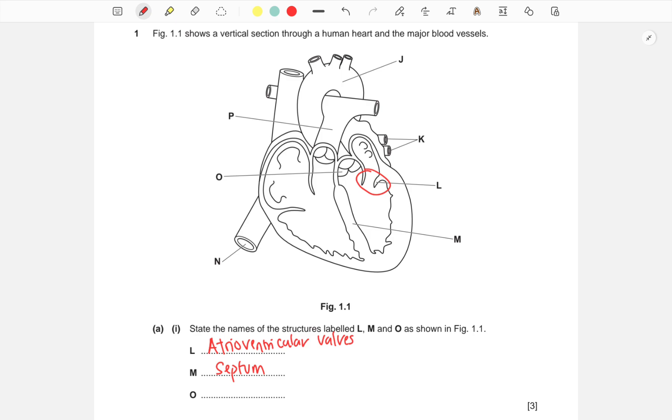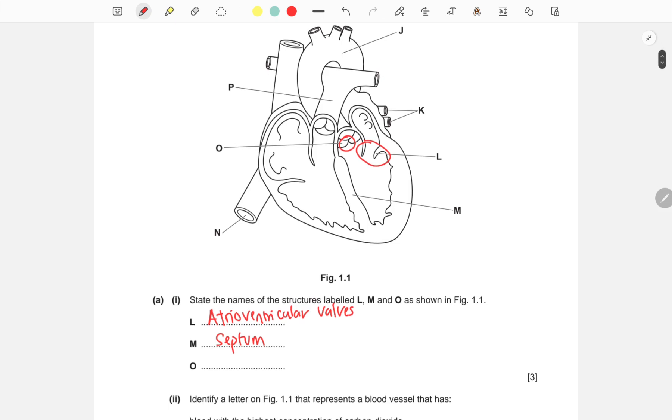O is referring to the valve right before the aorta, which is called the aortic valve, or some textbooks might refer to as a semilunar valve. Both are acceptable.